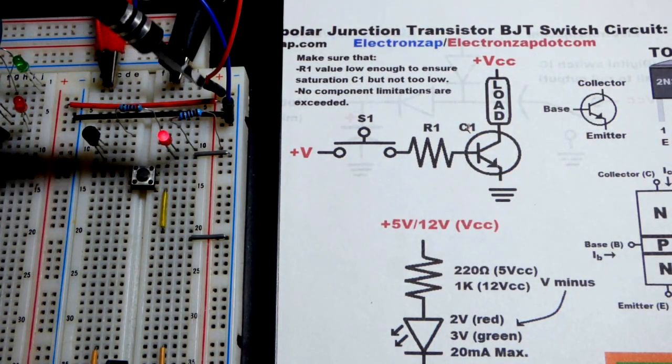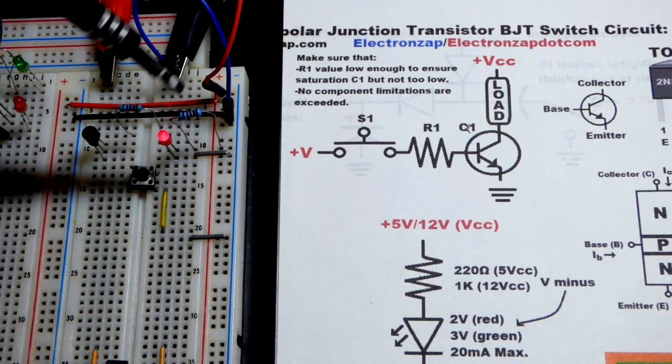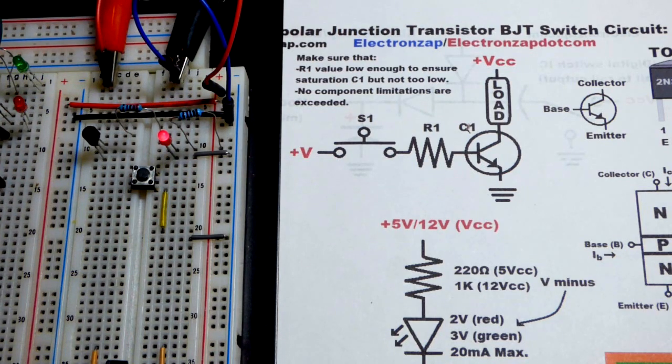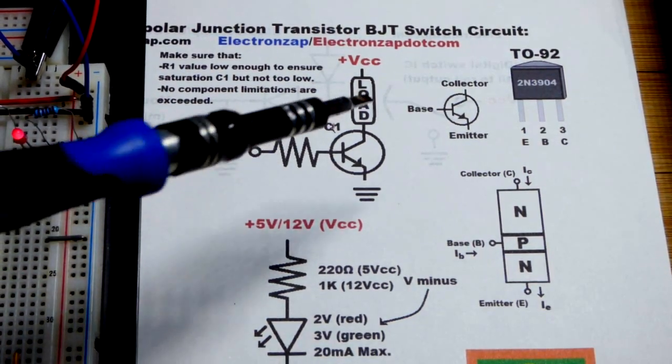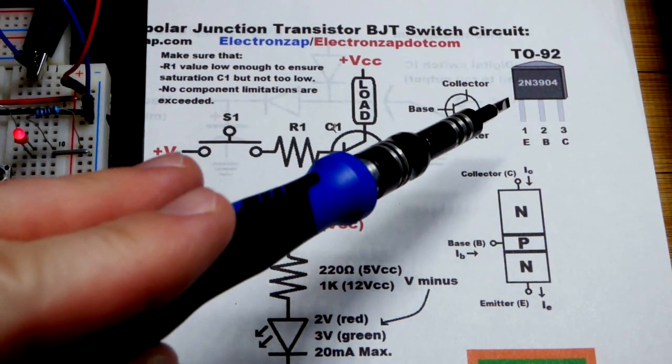So we still want to take that current as a signal to turn the LED on and off fully. So we're going to use the 2N3904.